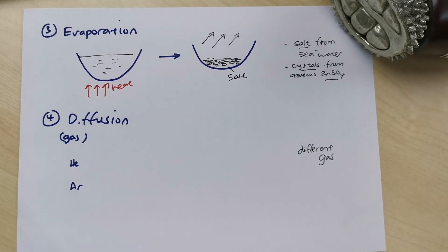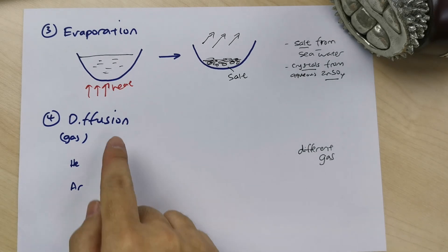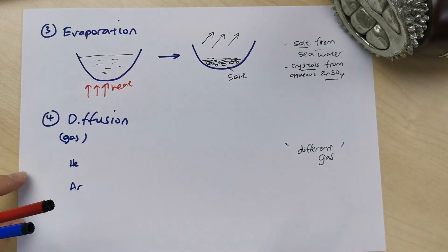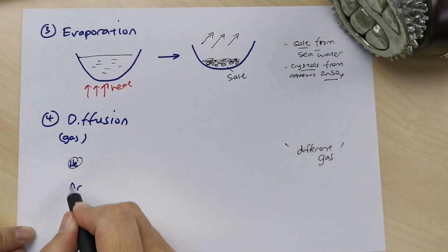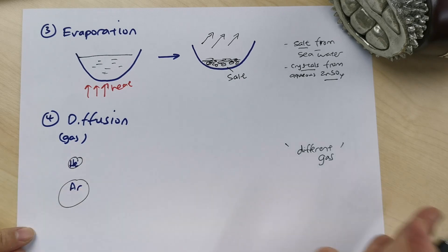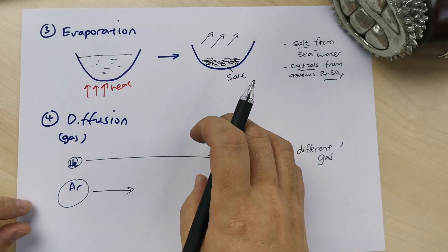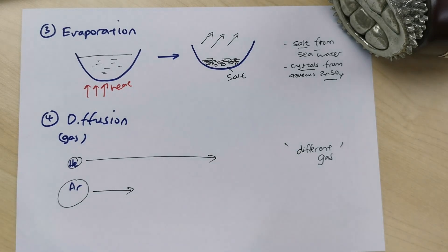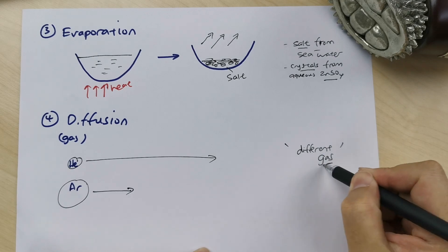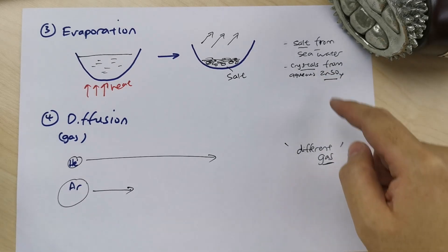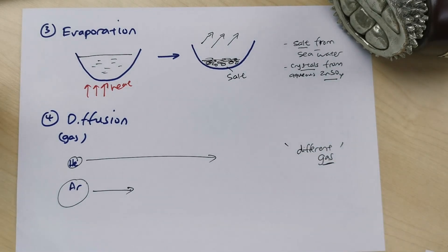Diffusion is interesting — you won't easily find it in the textbook but they like to put it in exam questions. Diffusion is used to separate different kinds of gases; it only applies to gases. For example, to separate helium and argon: helium diffuses faster and argon diffuses slower, so you can collect them separately. Remember, diffusion is only for gas — when you see different types of gases in a question, use diffusion to separate the mixture.